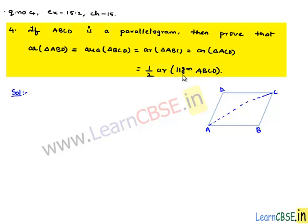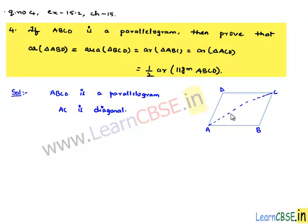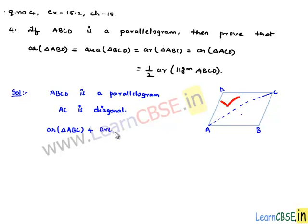In order to prove that, let us consider a parallelogram ABCD. Initially, let us draw AC as a diagonal. This diagonal divides the parallelogram into two triangles: triangle ADC and triangle ABC. Therefore, area of triangle ABC plus area of triangle ACD equals the whole area of parallelogram ABCD. Let this be equation number 1.